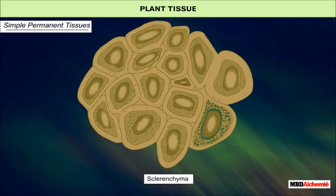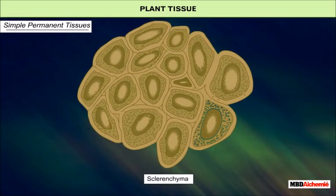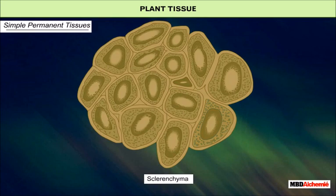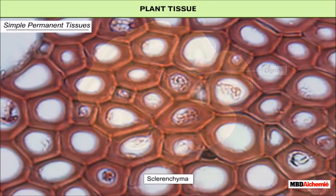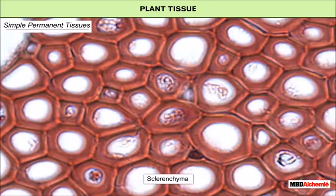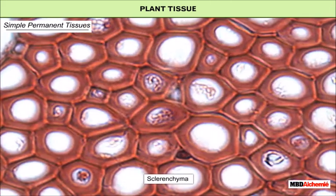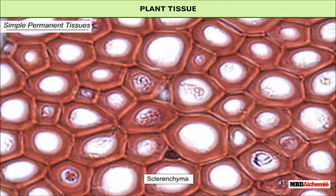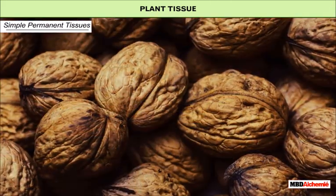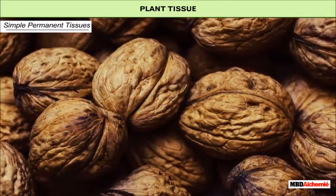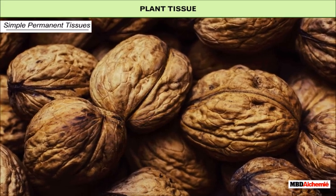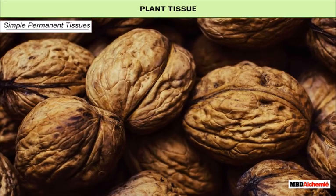Sclerenchyma is formed of dead cells. The cells are long and narrow as the walls are thickened due to lignin. It provides strength to the plant parts and also forms the hard covering of seeds and nuts.